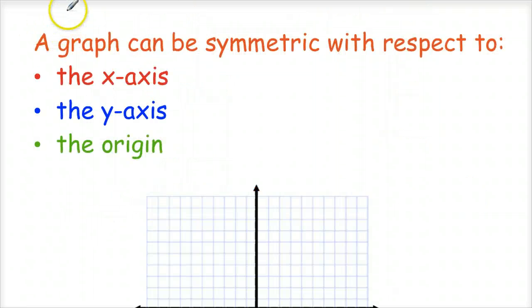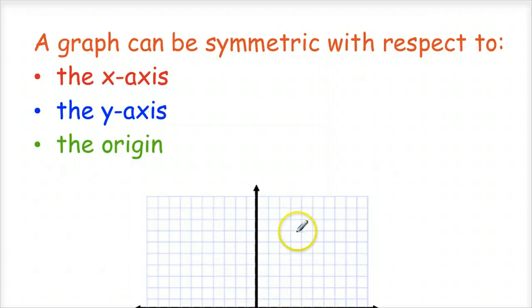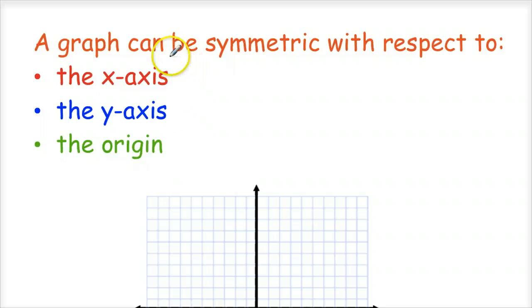The next concept we're going to talk about is a graph being symmetric with respect to the x-axis, y-axis, or the origin. If you were to graph the two previous equations, the first one is a line and you wouldn't really see any symmetry. But the second one was a parabola, and parabolas are usually symmetric to the y-axis unless they're moved around on the coordinate plane. Any graph can be symmetric to these three parts of the coordinate plane: the x-axis, the y-axis, or the origin.